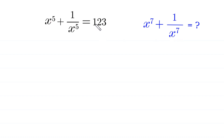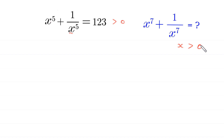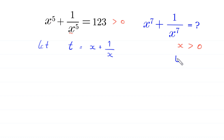Since 123 is greater than 0 and here we have an odd power of x, x must be greater than 0. Now suppose t is equal to x plus 1 over x, and t must also be greater than 0.